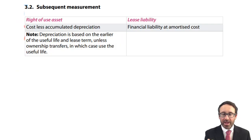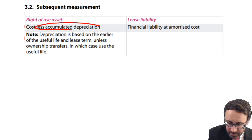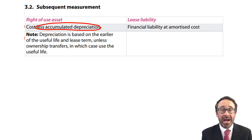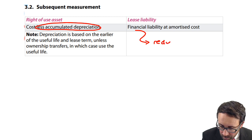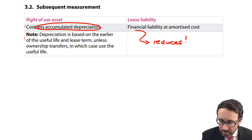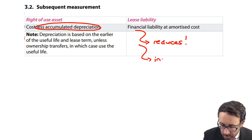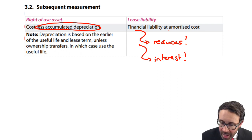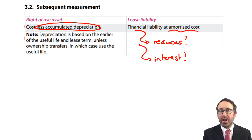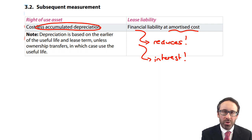From the statement of financial position perspective, you then need to depreciate the right-of-use asset. You also have a financial liability at amortised cost — which we cover in financial instruments in F2. Effectively, each year the liability reduces because of payments made, and you also charge interest on the outstanding liability to the statement of profit or loss. That's what the 'amortised cost method' means: reduce the liability by payments made and charge interest on the outstanding balance.